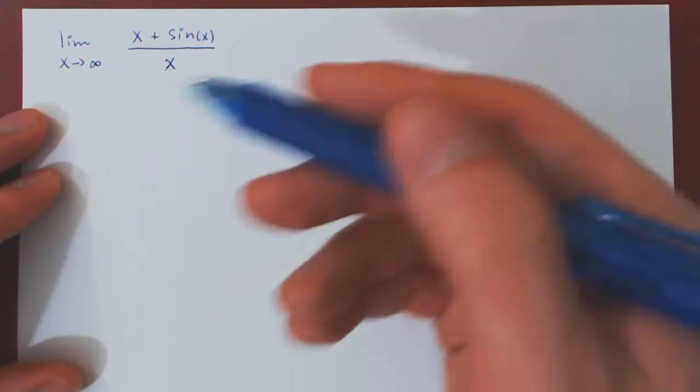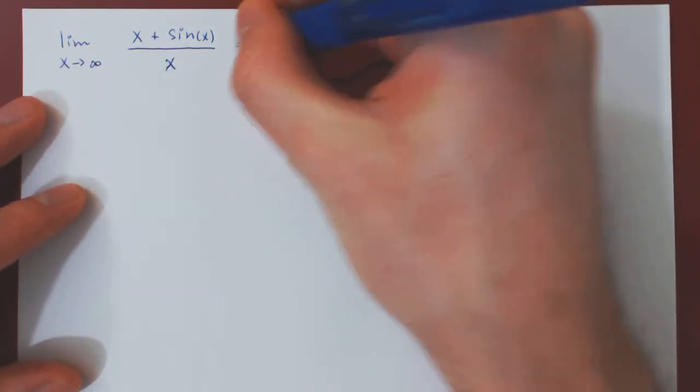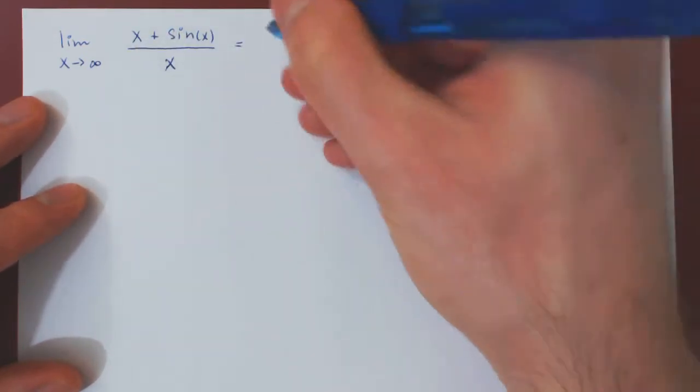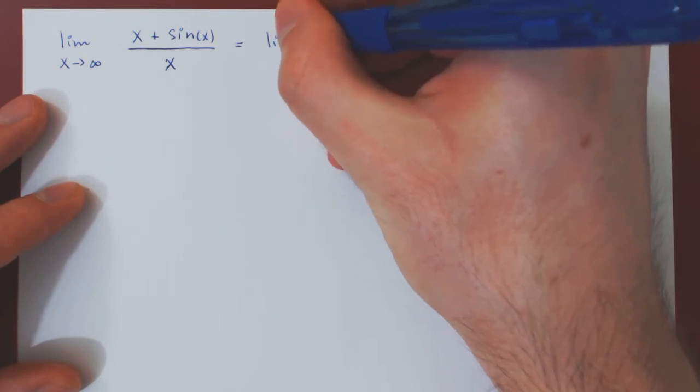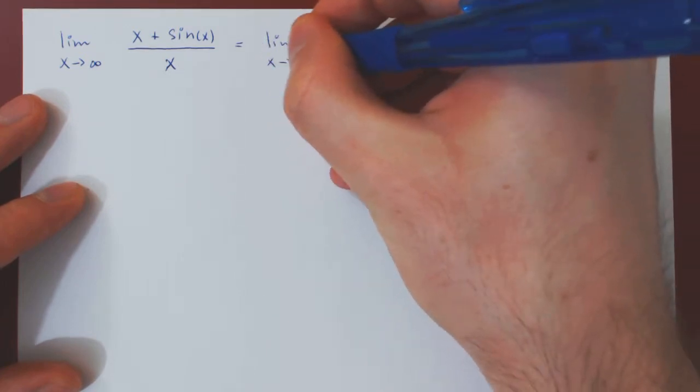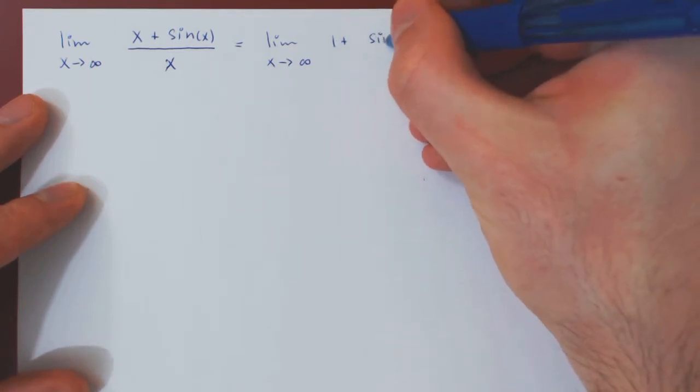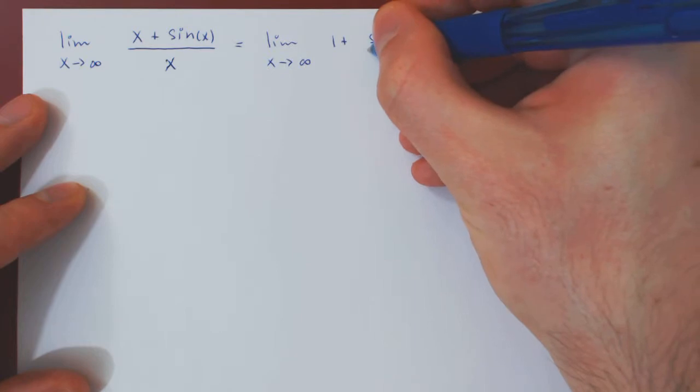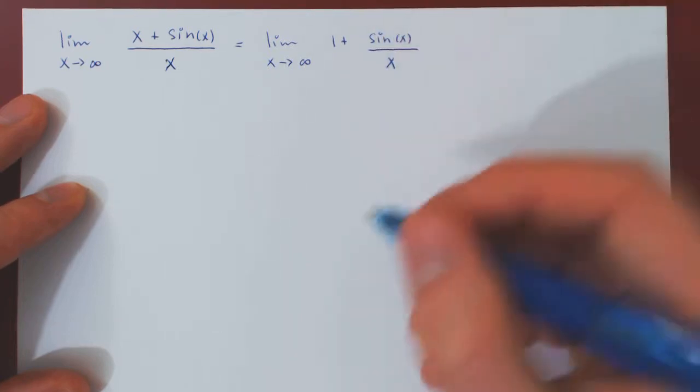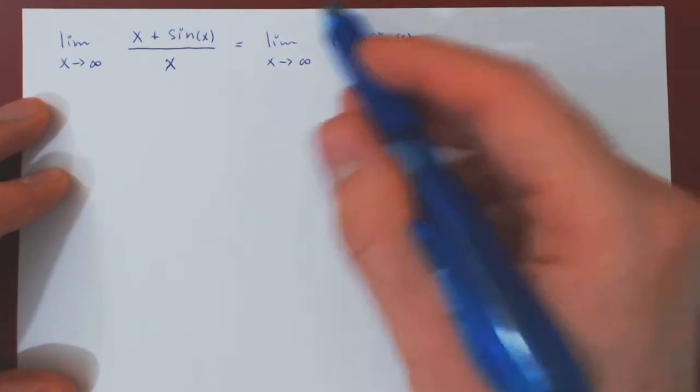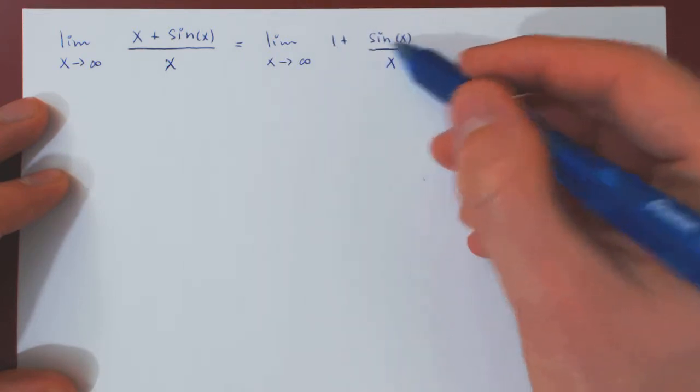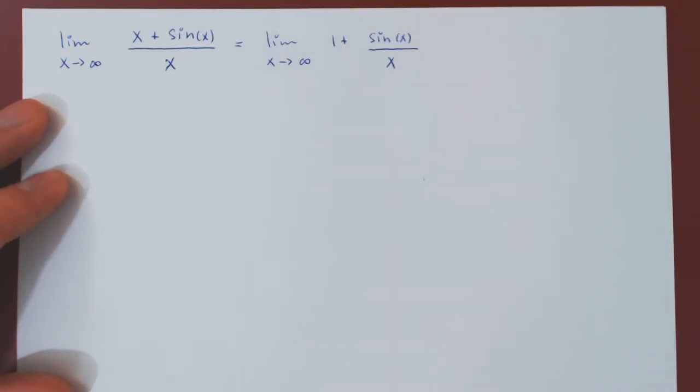So let's first look at this on an elementary point of view. Let's divide through by x. So x over x is simply 1 plus sine of x over x. So the only thing of interest really here is what's happening to sine of x over x when x tends to infinity.